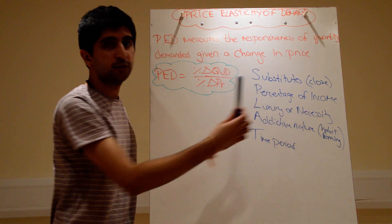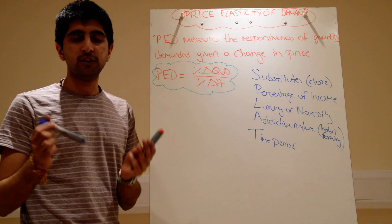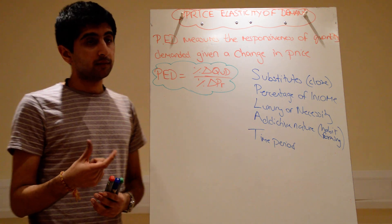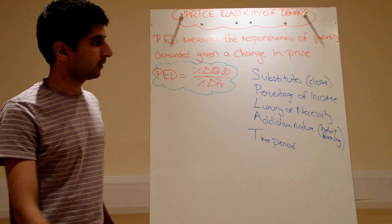So the closer the substitutes, the more substitutes there are, and the closer the relationship between them, the more elastic demand will be for those types of goods.